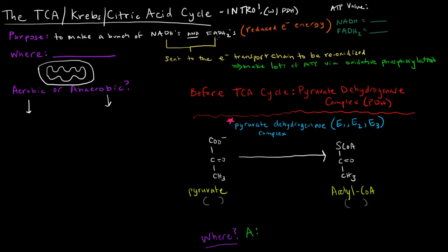So now, these reduced components can then later be sent to the electron transport chain, which we'll talk about in a future video, to be re-oxidized. Now, the oxidation of these NADHs and these FADH2s is coupled to the phosphorylation of ADP to make ATP. That process is called oxidative phosphorylation, and we'll talk more about that later.